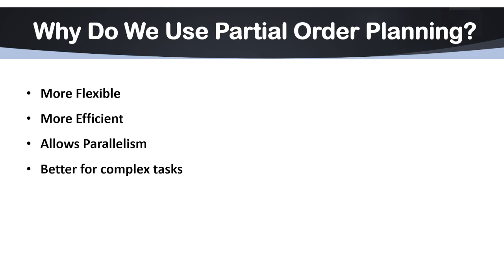Why do we need partial order planning? The first need is it is flexible as compared to total order planning. The planner does not force a strict order unless necessary. This makes plans easier to adapt.